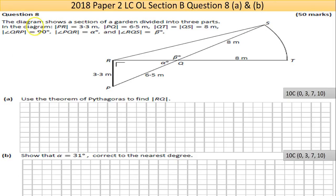The diagram shows a section of a garden divided into three parts. In the diagram you have the length of PR marked 3.3, so that's that there. PQ is 6.5, this is a right angle triangle so that's the hypotenuse of that small triangle there.